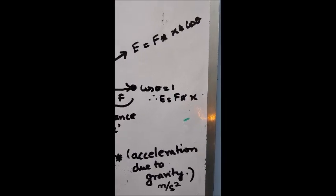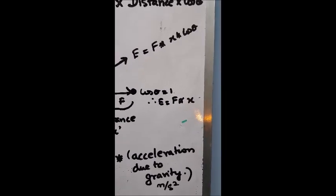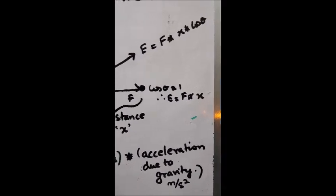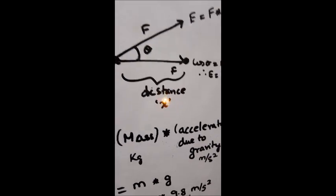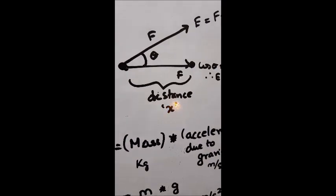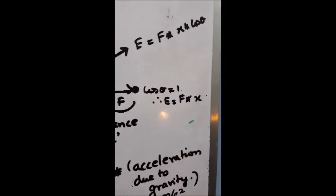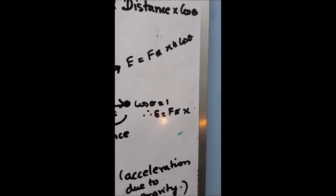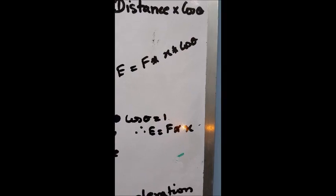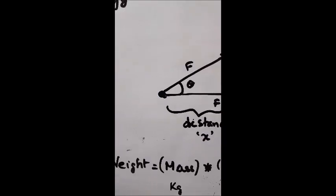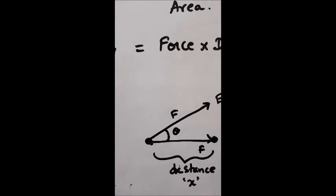But when we try to move an object at a particular angle which is deviated by an angle theta, the cosine of the angle becomes this thing, which means that energy equals the cosine of the angle between the point of application and the point to which it moves times the force times the distance.